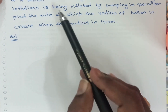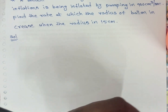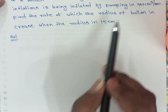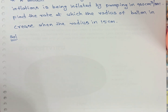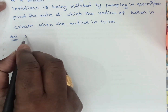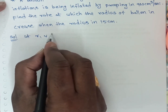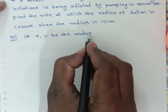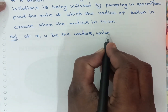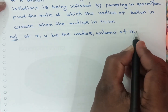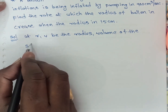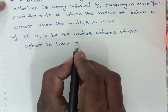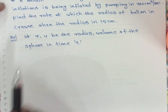We need a gas to fill the balloon, and it remains in a spherical shape. We need to find the rate at which the radius of the balloon is increasing. Let R be the radius and V be the volume of the sphere at time T.